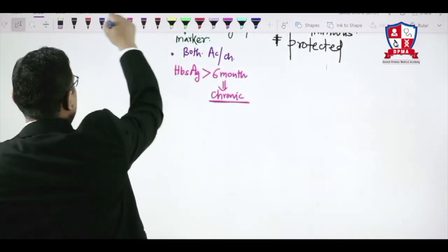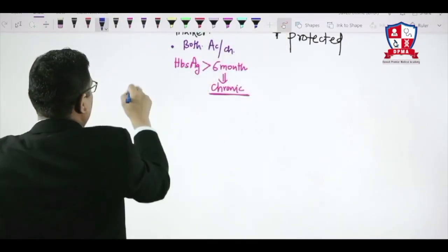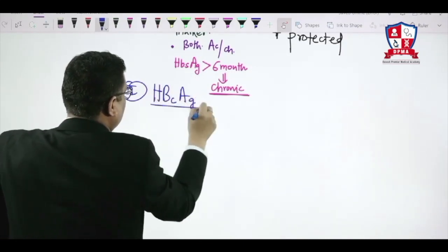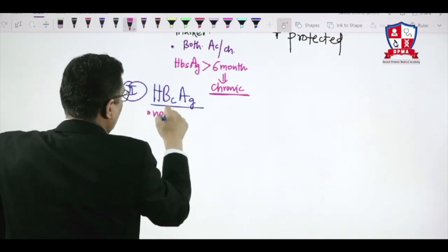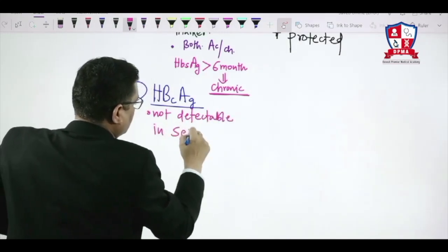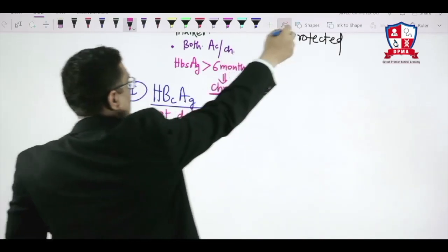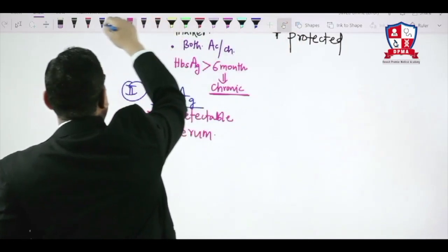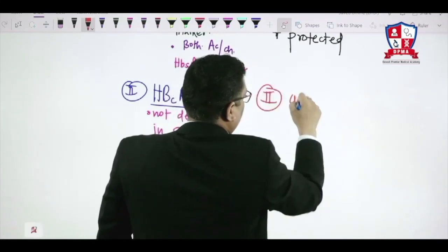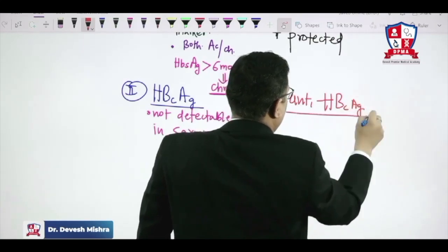Next is HBcAg. HBcAg is not detectable in serum — it is simply not detectable in serum. So what we detect in serum is the antibody against HBcAg; the antibody against HBcAg is detectable in serum.